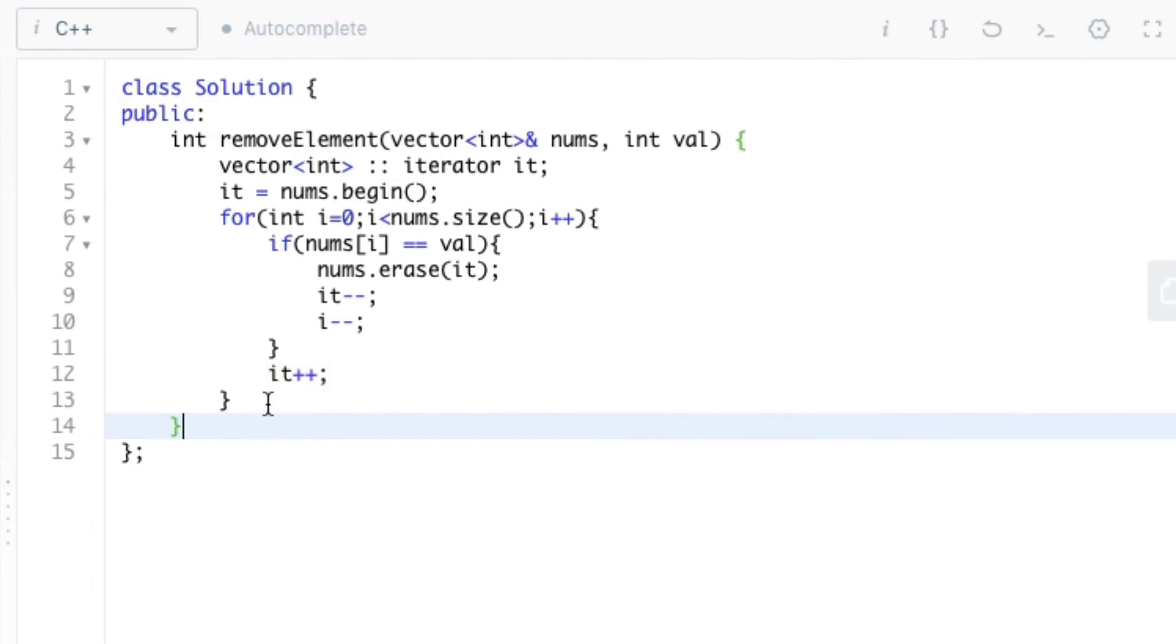And finally, after finishing the loop, we can return the size of nums. So here the reason for decrementing the value of it is that whenever we erase an element from the